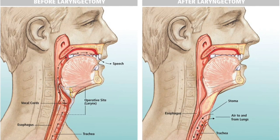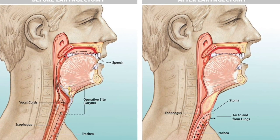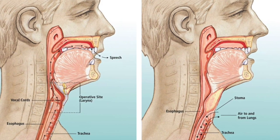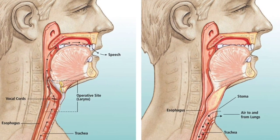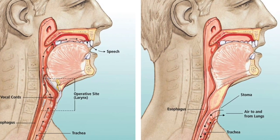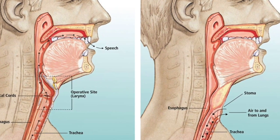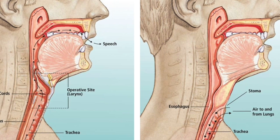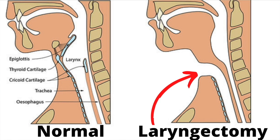A total laryngectomy is usually performed when the disease cannot be managed with more conservative measures. In a total laryngectomy, the entire larynx is removed, including the vocal cords. The airway is separated from the nose, mouth, and esophagus. The trachea is sutured to the neck, and there is no connection from the nose and mouth to the lungs. The individual does not breathe through the upper airway; instead, breathing occurs through the stoma in the neck.